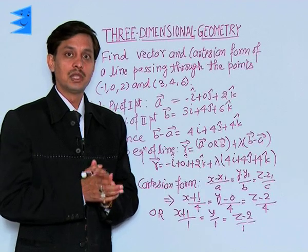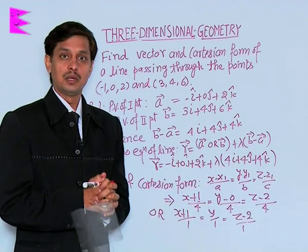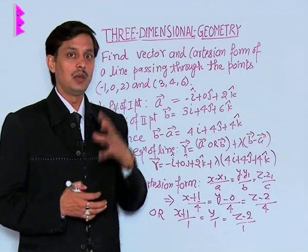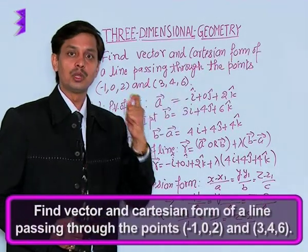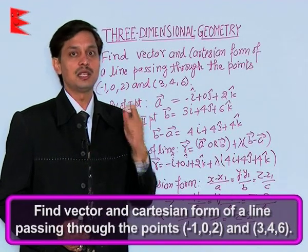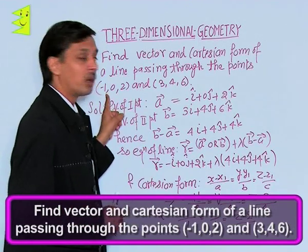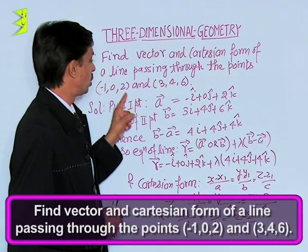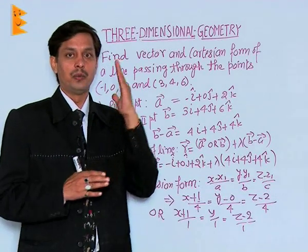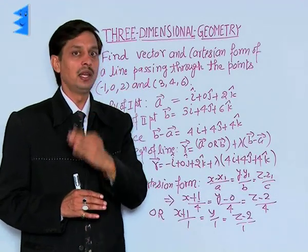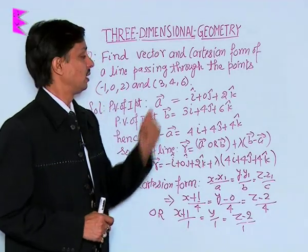Now, I want to tell you how to find the equation in different situations — that is, how to find the equation of a line if it is passing through two points. Find the vector and Cartesian form of the line's equation which is passing through two given points whose coordinates are (-1, 0, 2) and (3, 4, 6).